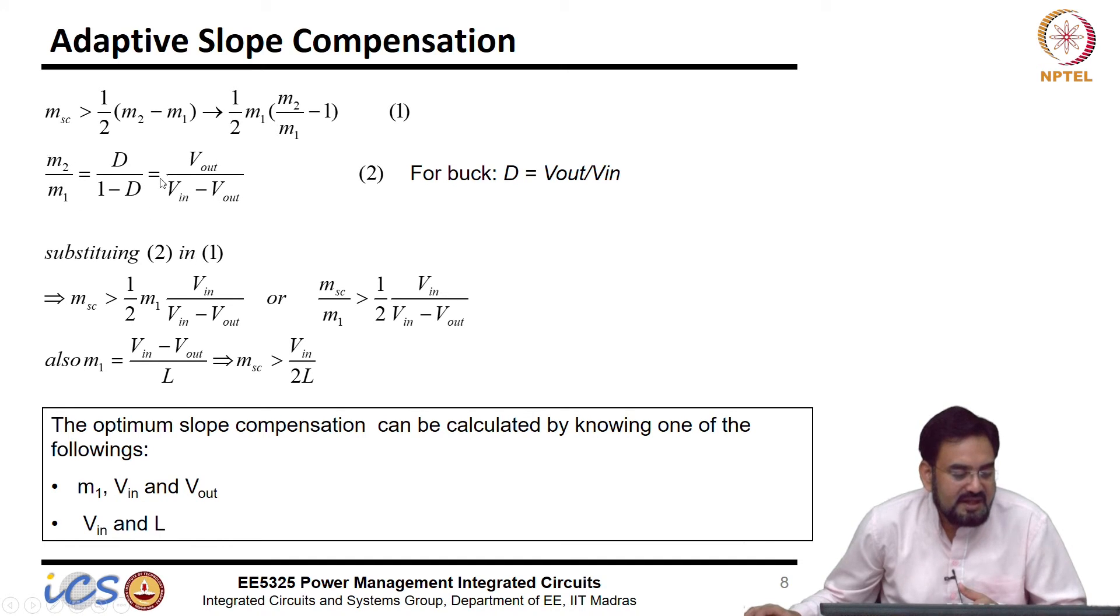And I also know that M2 over M1 is D over 1 minus D which is nothing but Vout over Vin minus Vout. So, if you substitute this M2 over M1 from this here, what you get is half of M1 Vin over Vin minus Vout or the ratio of these compensating slope to M1 will be half of Vin over Vin minus Vout.